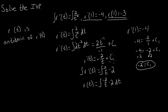We can take the anti-derivative of each term individually. For negative 2 over t, we know from a previous discussion that something of this form has an anti-derivative equal to that constant multiple times the natural log of the absolute value of t — so we get negative 2 times the natural log of the absolute value of t. The anti-derivative of the constant negative 2 is simply negative 2t. And after integrating, we add plus c2.